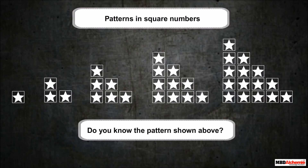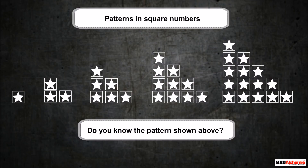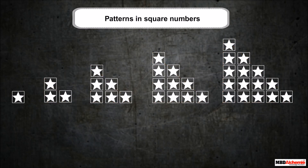Do you know the pattern shown above? These are the triangular numbers whose dot patterns can be arranged as triangles. Now, we combine two consecutive triangular numbers — like we add 1 star to 3 stars and get 4 stars.